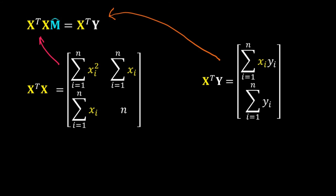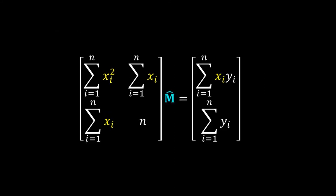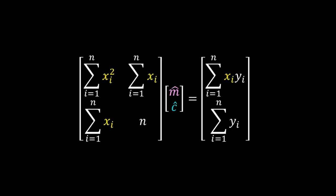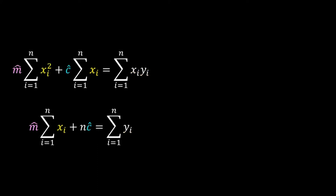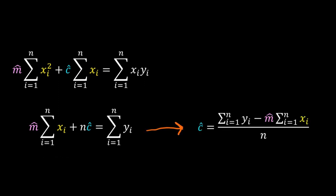Get back to the original equation and do some rearrangement. Getting rid of the matrix representation and writing everything in terms of linear equations, we get a system of two equations involving m̂ and ĉ. From the second equation, we get ĉ = (Σyi − m̂·Σxi) / n.